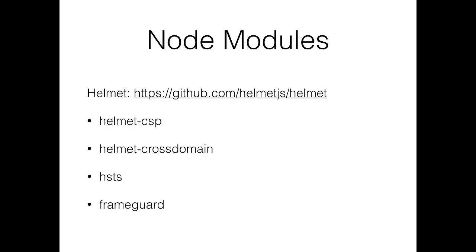Are there some known modules to help you with all this? Yes. My favorite is Helmet — it's the most comprehensive one I've found. It is an Express/Connect middleware that takes care of normalizing across browsers — for example, disabling XSS protection for older IE and enabling block mode for newer IE. They set up appropriate headers depending on your browser. And if you want to pick and choose specific headers, there are individual node modules available too.